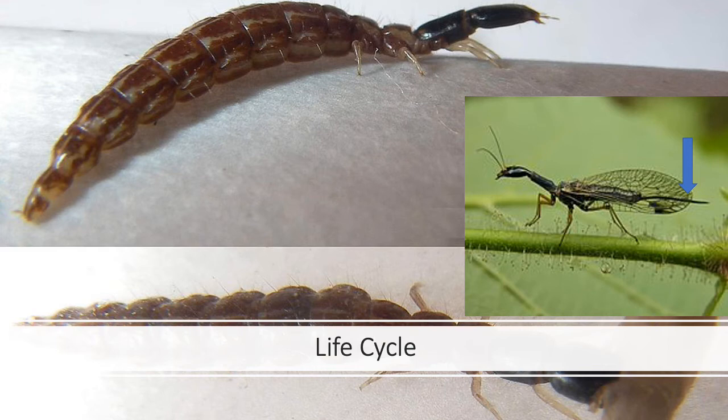Holometabolous insects, however, like our snake fly, as well as moths, butterflies, bees, wasps, true flies, and beetles — those ones are going to be much different from their larvae. They're going to go through those four different life stages, and there's going to be a lot of time for them to change their morphology.